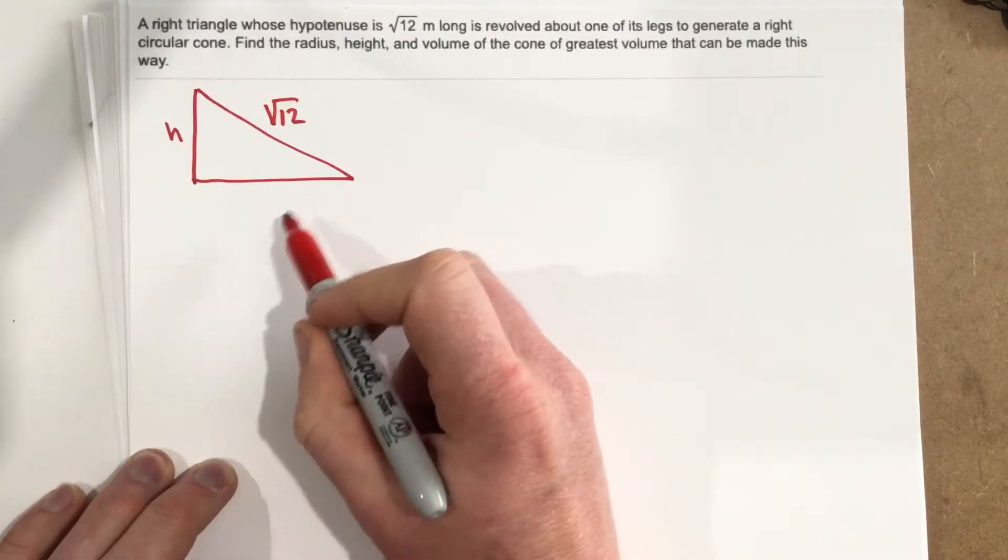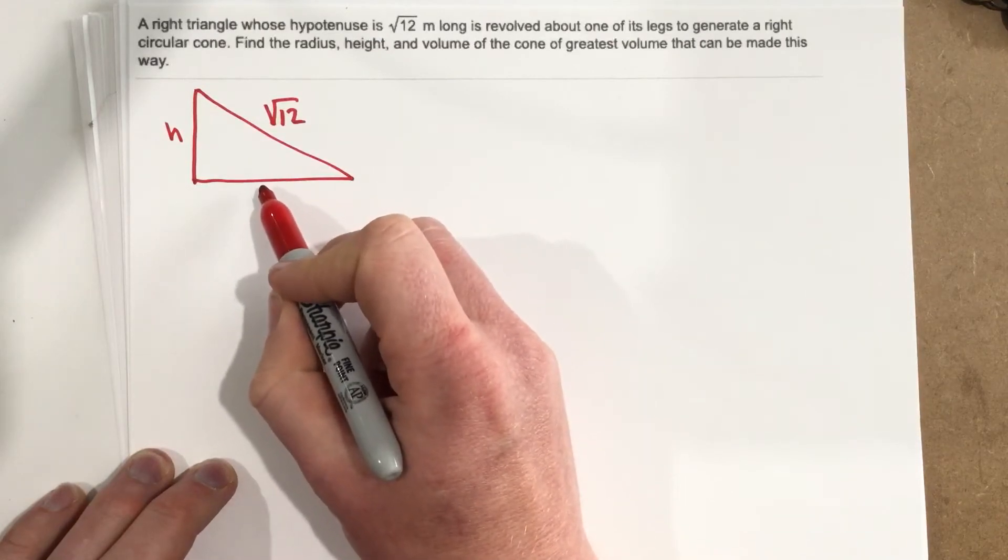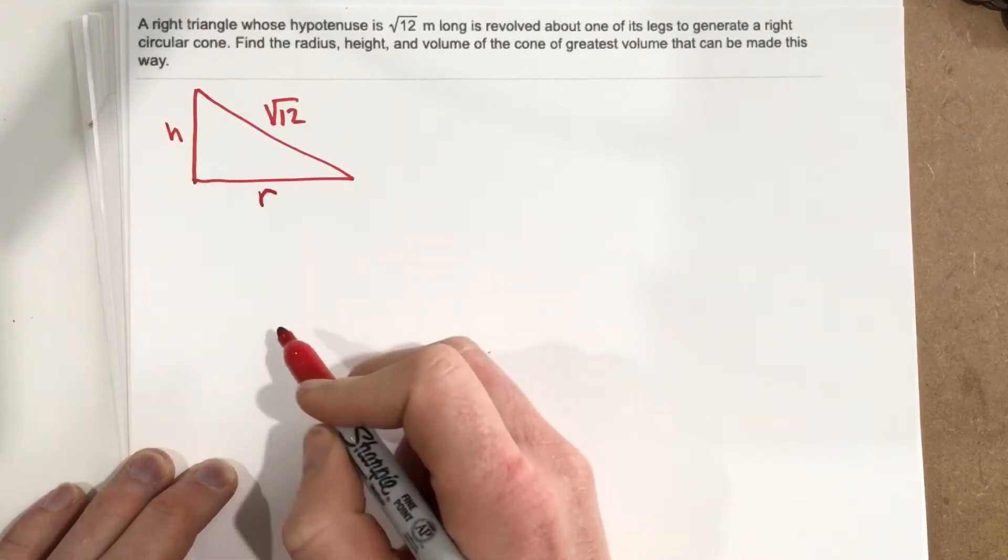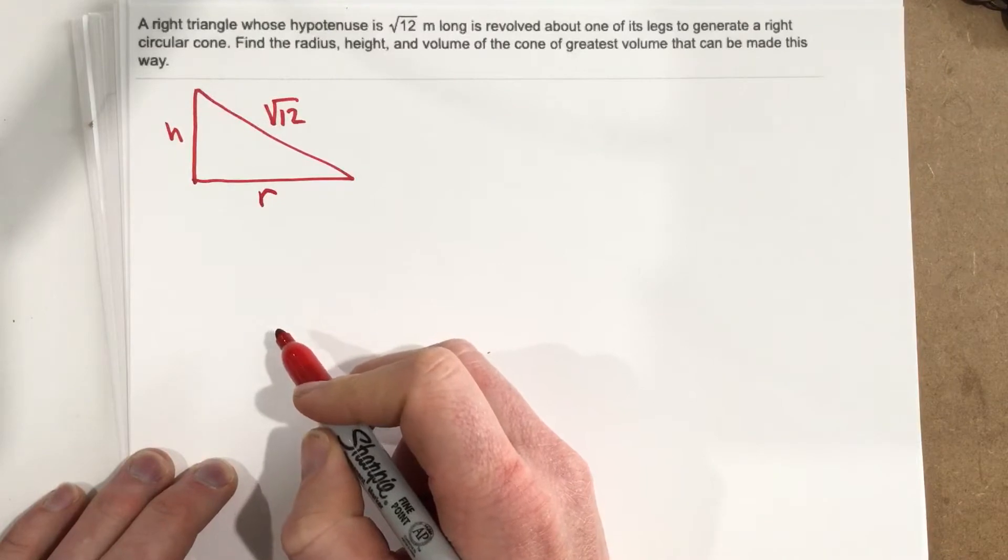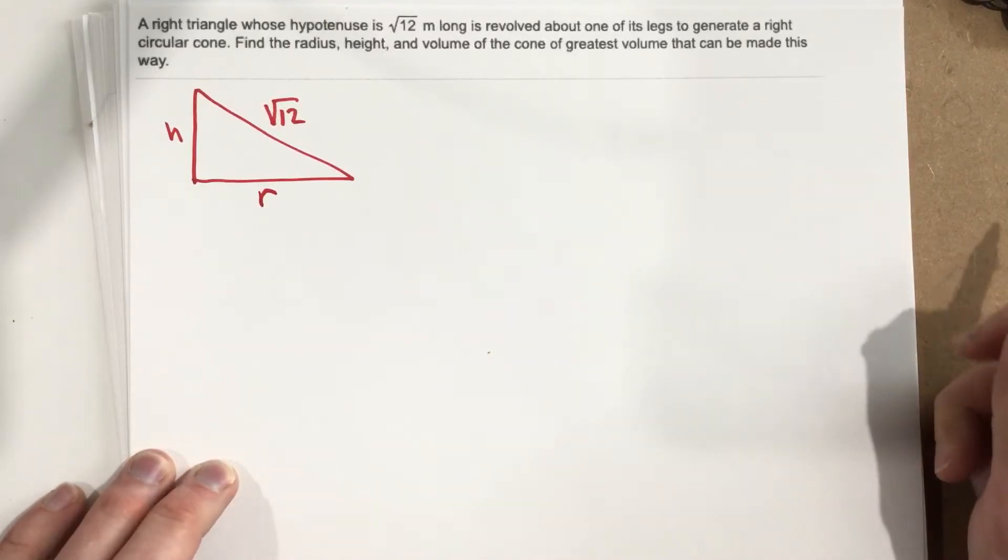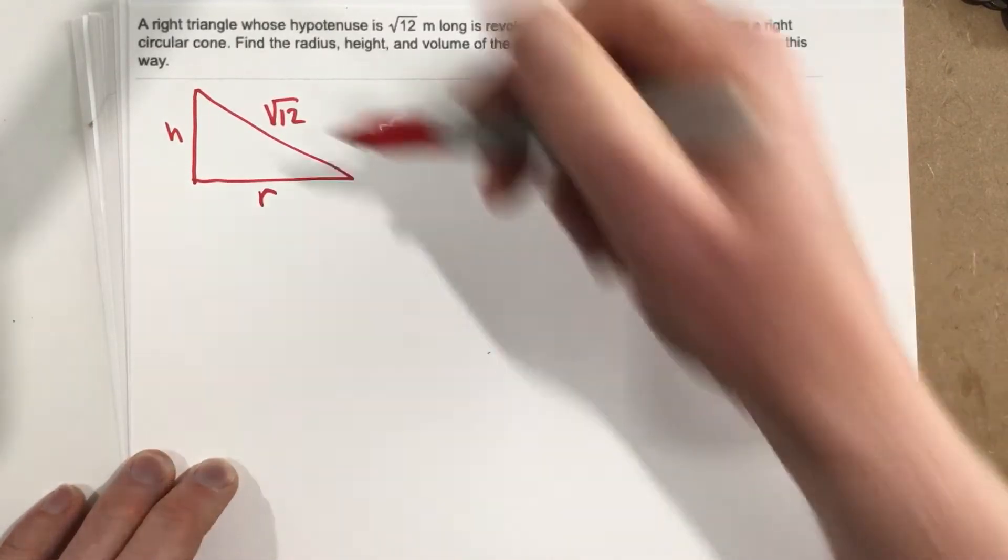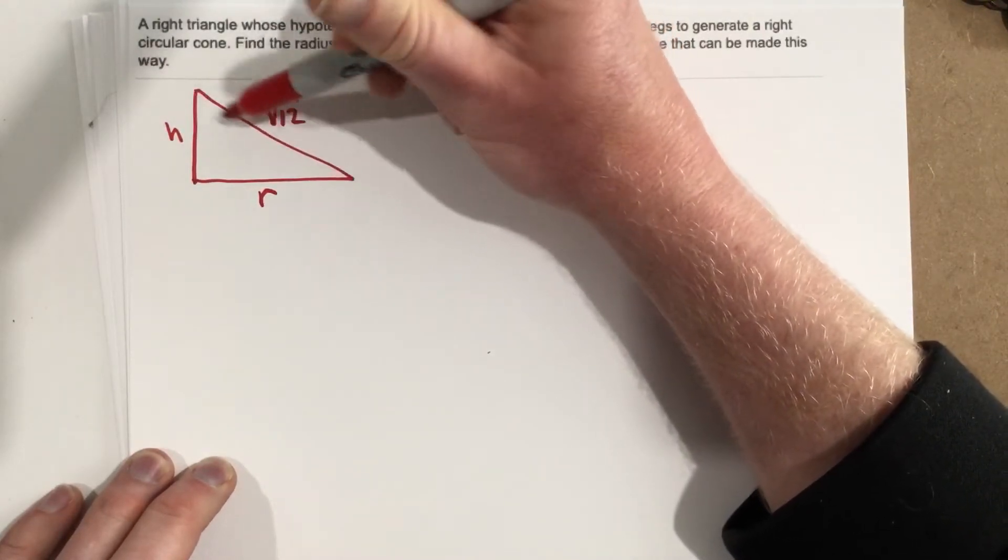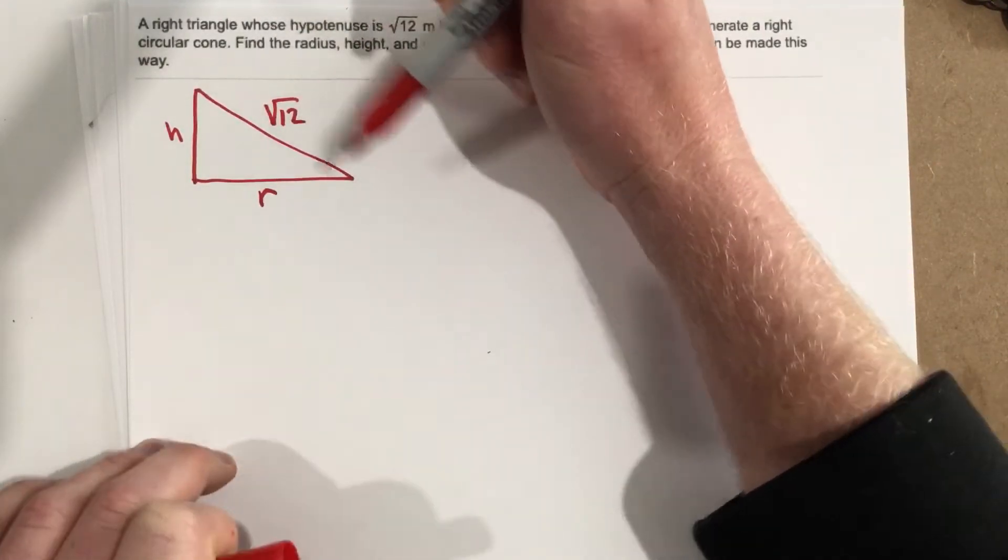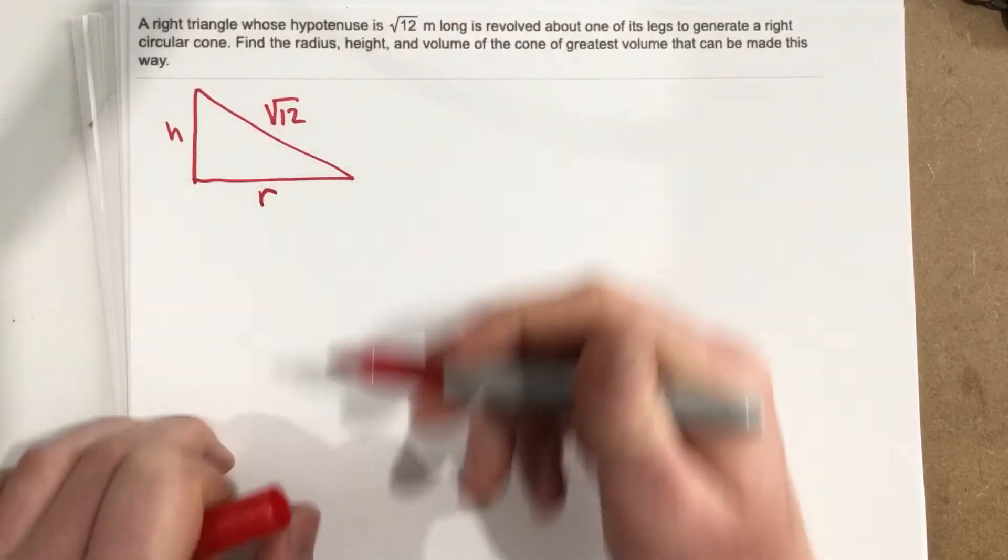Essentially you would have the edge of the cone, the angled edge of the cone, being √12, height in the middle, radius there.